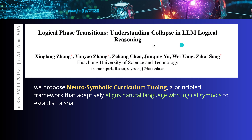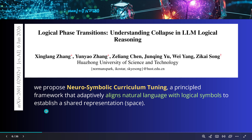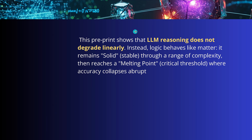So this is the paper of today: "Logical Phase Transitions: Understanding a Collapse in LLM Logical Reasoning." This preprint will show us that LLM reasoning does not degrade linearly if we increase the complexity of our task.